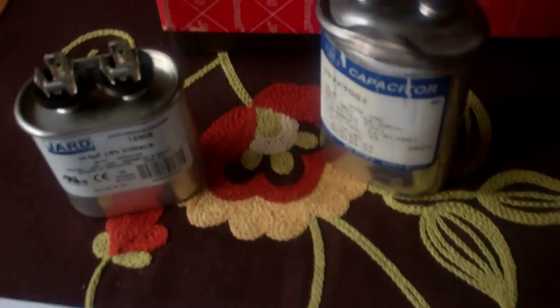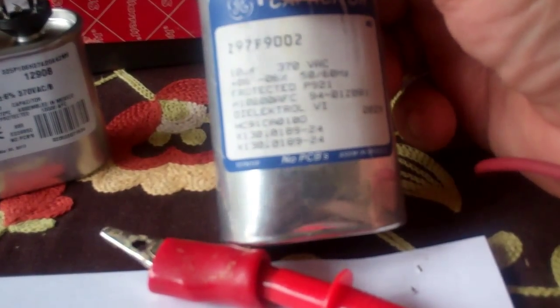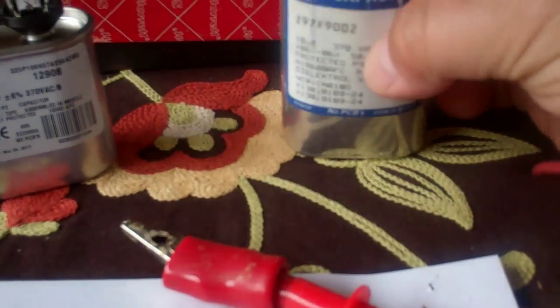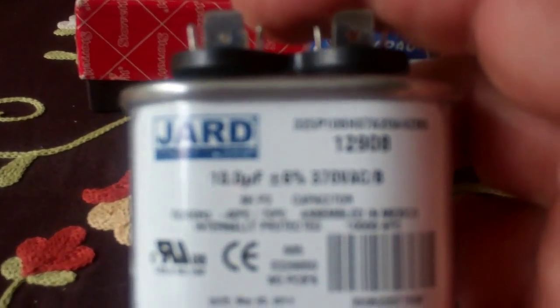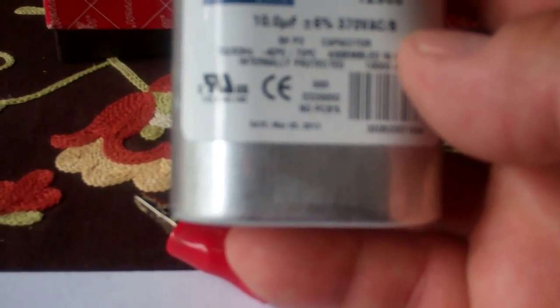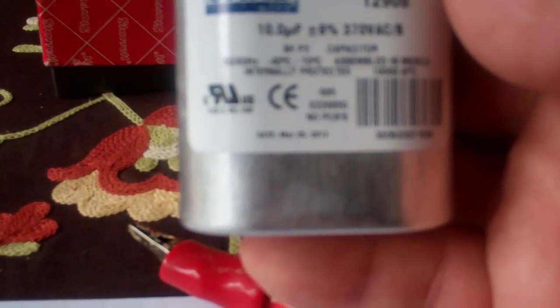Now we're going to look at the capacitor. Here's the old one and the new replacement. Even though it's smaller, it's what's on the label that matters. And what we were looking for was 10 microfarad, 370 volt AC, plus or minus 6%, 60 cycles, 60 hertz. So 60 cycles per second. And what we got is exactly the same thing. 10 microfarad, plus or minus 6%, 370 volt AC, 60 hertz, 50 slash 60 hertz. So we can check that.